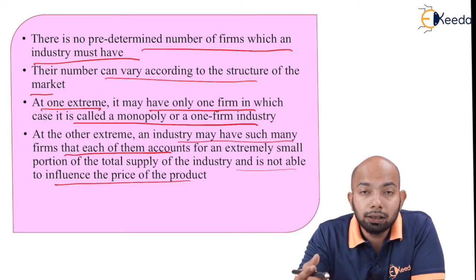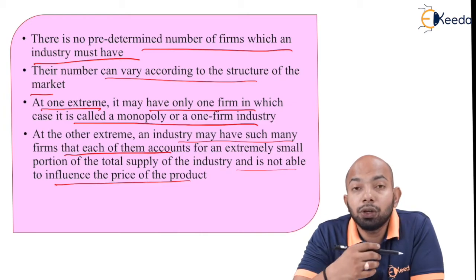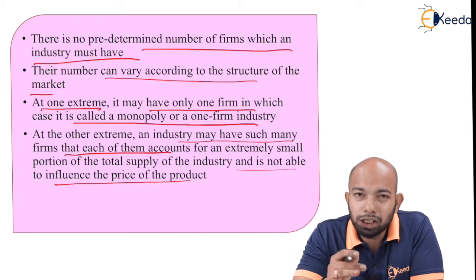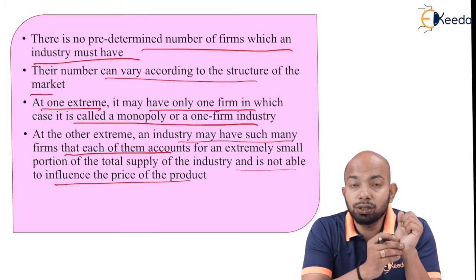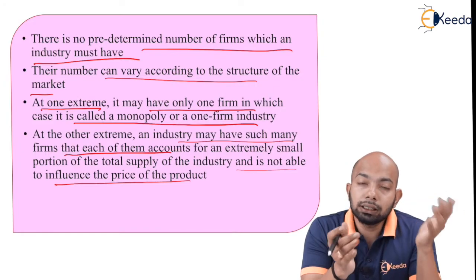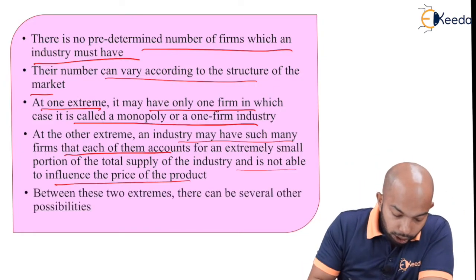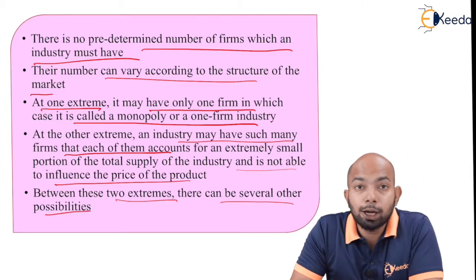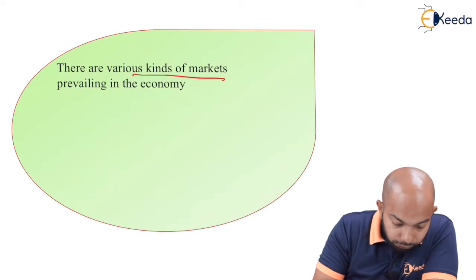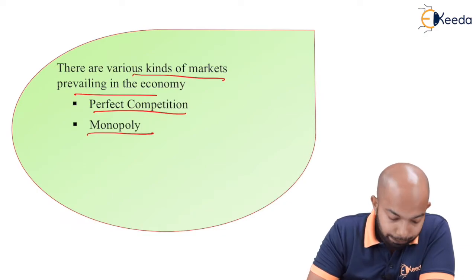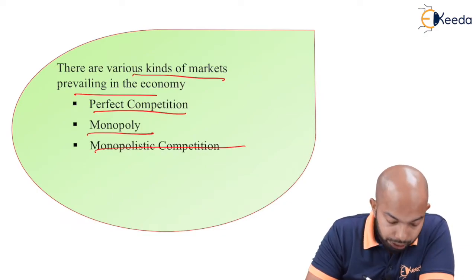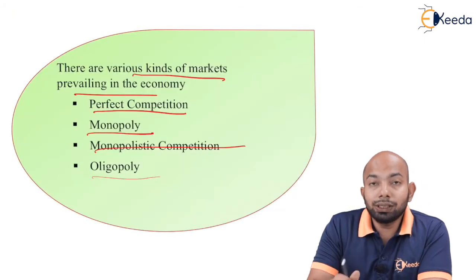If there is just one firm in an industry it is a monopoly, but if there are different firms they have no control on the price — they cannot influence the price. Just like in competition, you have different car brands and you need to keep pricing within a segregated value depending on the kind of services provided. Between these two extremes there are several other possibilities. The various kinds of markets prevailing in an industry are: perfect competition, monopoly, monopolistic competition, and oligopoly.